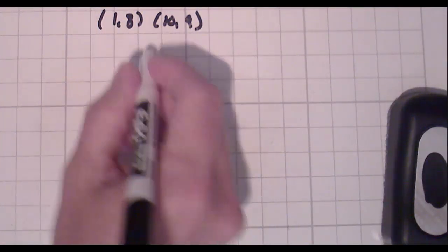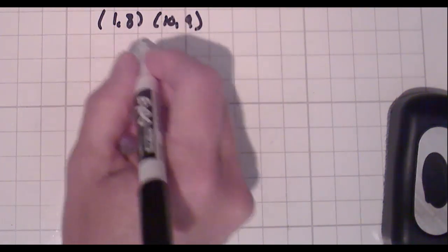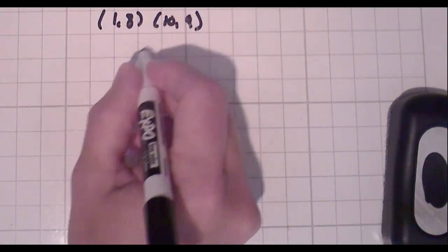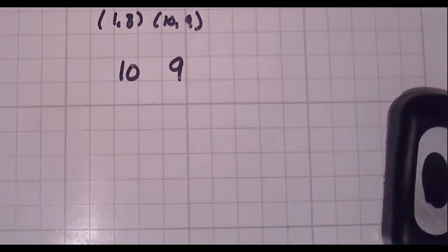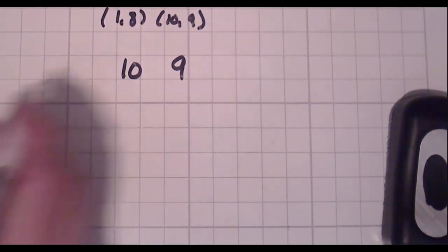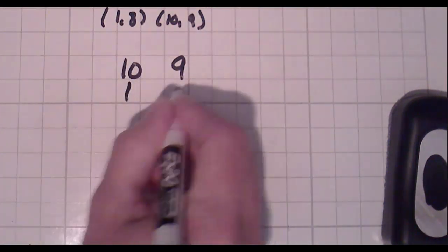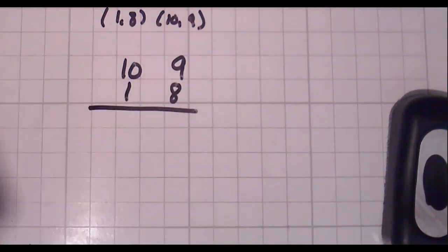First thing I want you to do is write one of the sets of numbers, and I don't care which one you write first. Let's start with the 10 and the 9, and just stack them like that. Just written next to each other, take away the parentheses, take away the comma. The second set of numbers right underneath it. So there's my 10, 9, and there's my 1, 8, and draw a line under it.